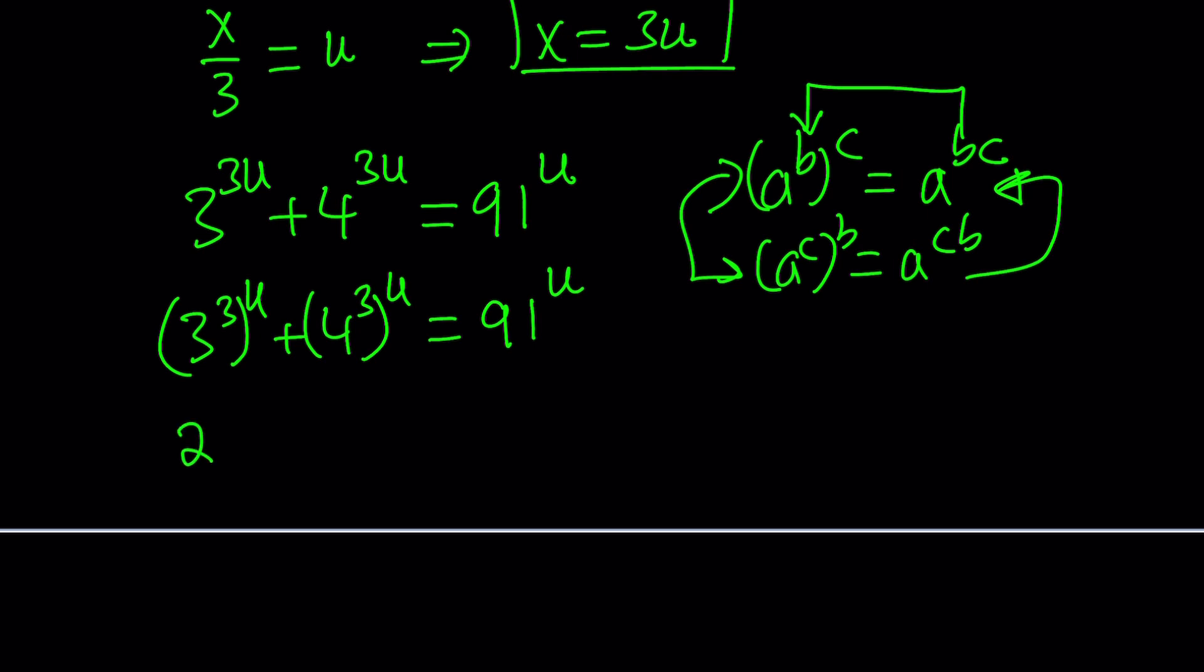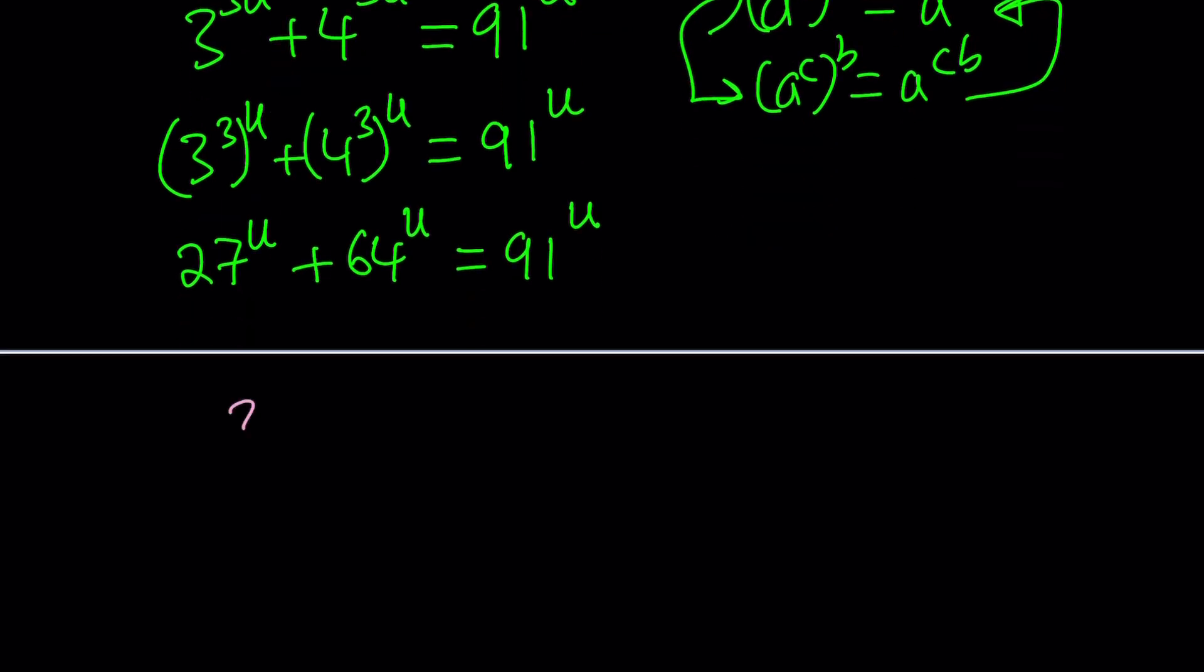27 to the power u, and this is 64 to the power u, and that's equal to 91 to the power u. What is so significant about this method? Well, the very fact that 27 plus 64 is equal to 91. That's interesting. That means u equals 1, right? Of course, u equals 1. That doesn't mean x equals 1. It just means something else.